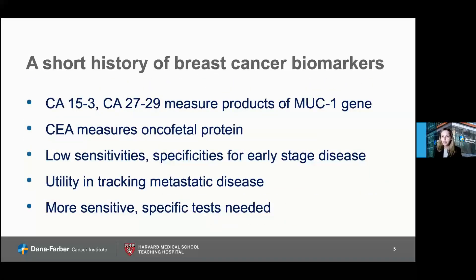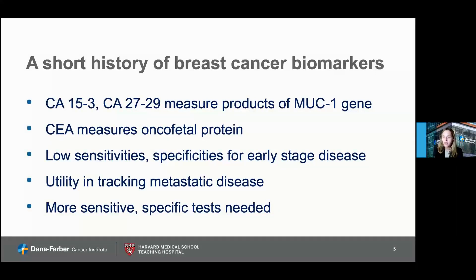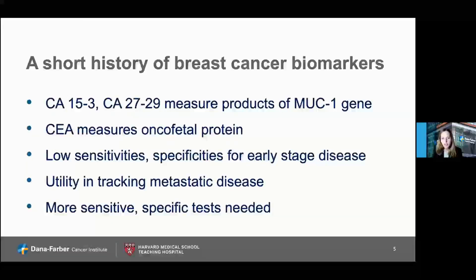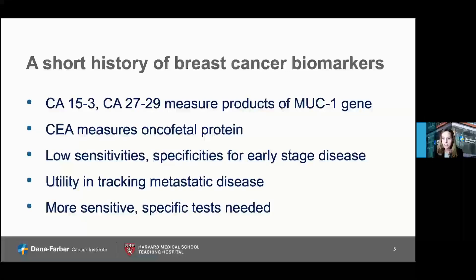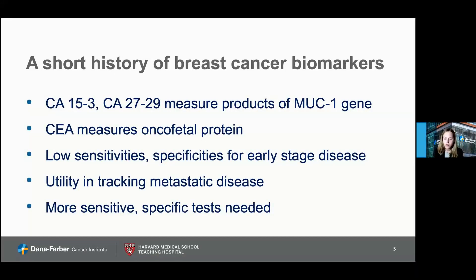A short history of breast cancer biomarkers — these are blood-based biomarkers and have been the holy grail for some time. We know about CA15-3 and CA27-29, which measure products of the MUC1 gene, whereas CEA measures oncofetal protein. These all have low sensitivities and low specificities for early-stage disease, and many guidelines recommend not using them in early-stage disease. They do have utility in tracking metastatic disease in some patients, but are not super sensitive in that setting either. More sensitive, more specific tests are needed.